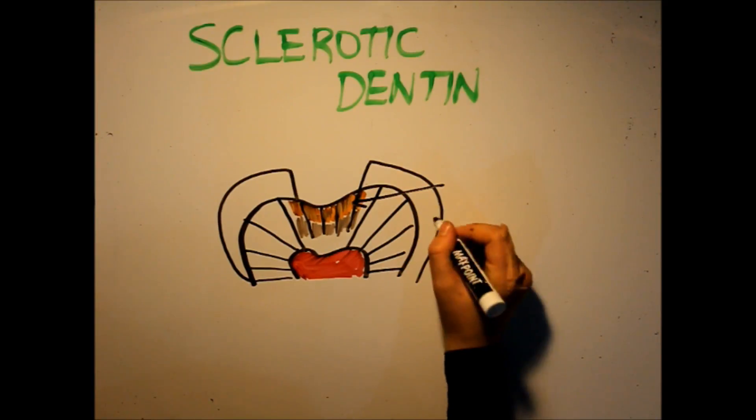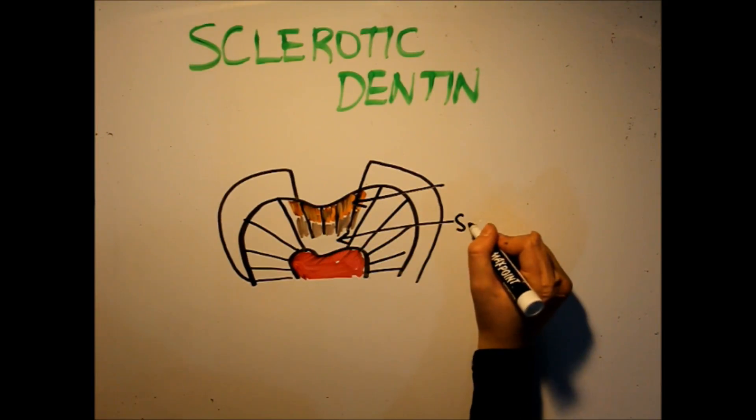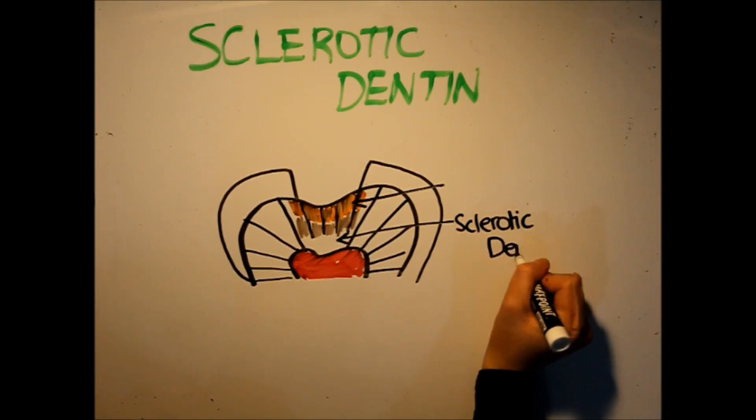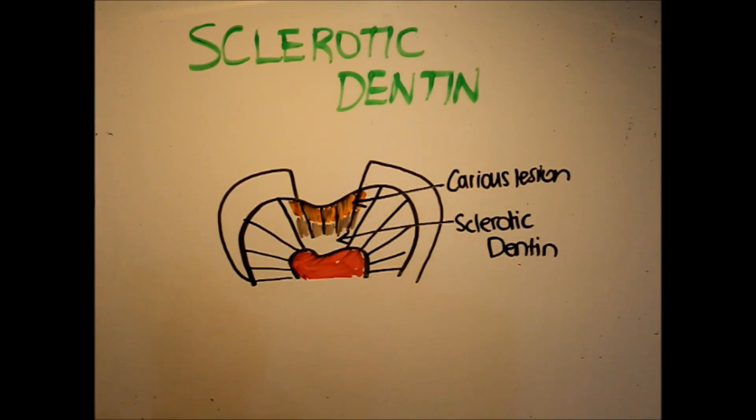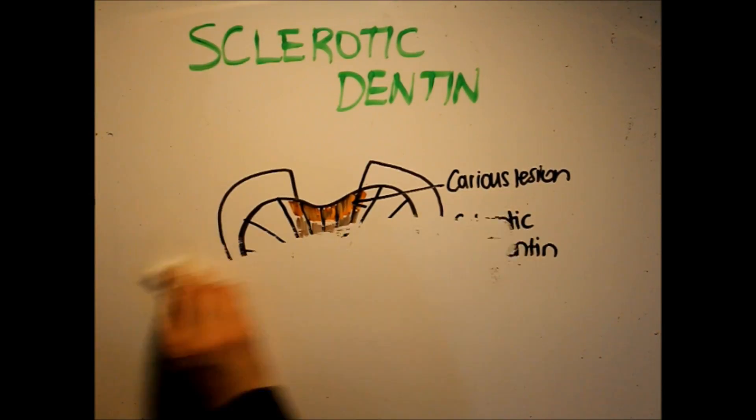Sclerotic dentin is not only seen as a result of chronic injury by caries or abrasion, but may also be a manifestation of the normal aging process. Just like tertiary dentin, sclerotic dentin is expected to be found either near the pulp or at the specific site of injury.